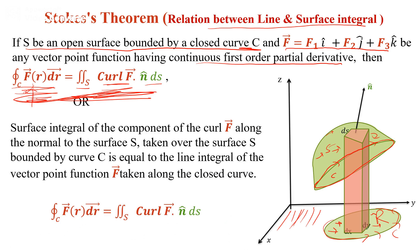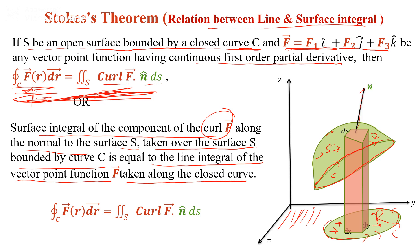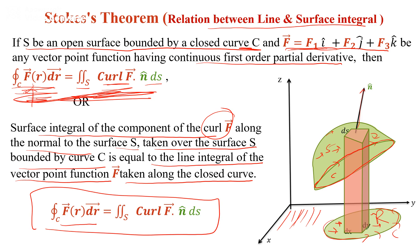Another statement: the surface integral of the component of curl F along the normal to the surface — that is n-cap, taken over the surface S bounded by the curve C — is equal to the line integral of the vector field F taken along the closed curve C. That is, the line integral of F·dr equals the surface integral of curl F · dS.